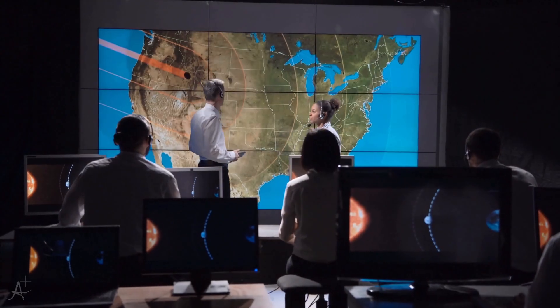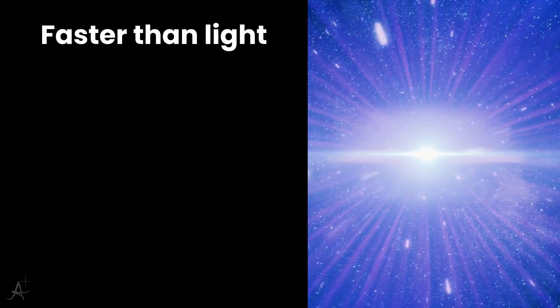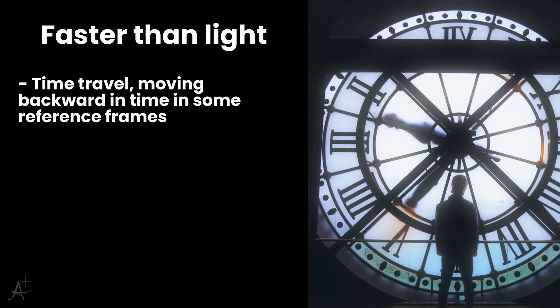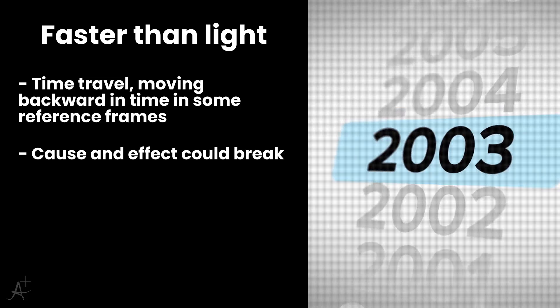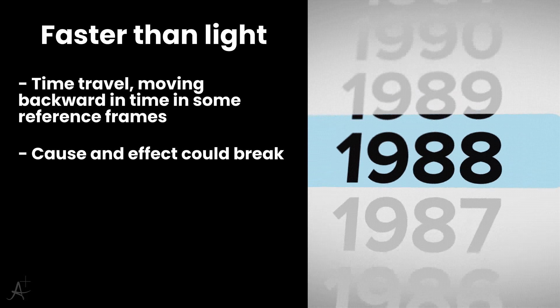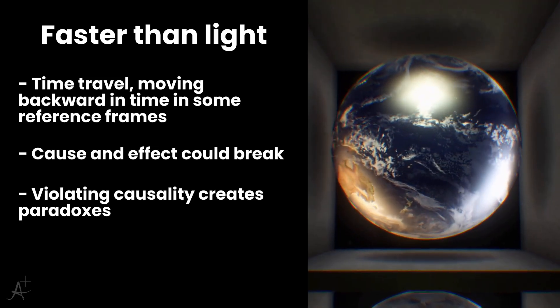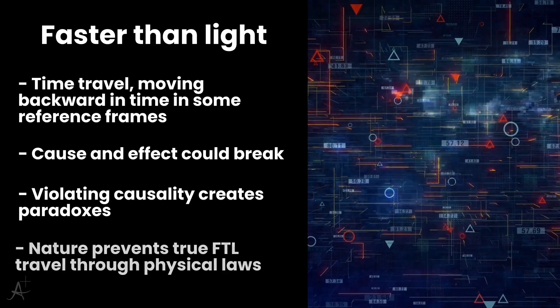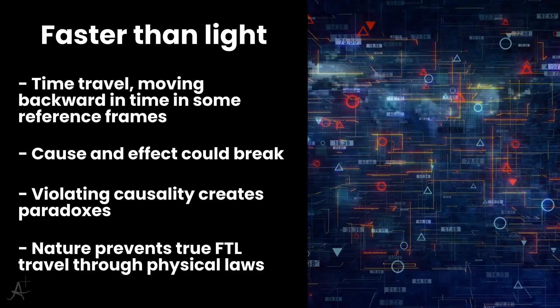But let's say we could somehow harness negative energy. If we could manipulate spacetime itself, would faster-than-light travel really be possible? Here's where things get even stranger. When you move faster than light, relativity predicts something astonishing. You could theoretically move backward in time. Faster-than-light travel and time travel are deeply connected. In some reference frames, an object traveling faster than light would arrive before it left. Cause and effect would reverse. It breaks one of the most fundamental principles of physics: causality. And once causality breaks, paradoxes start to appear. What happens if you go back and stop yourself from leaving? What if information arrives before it's sent? These contradictions make most physicists think nature has built-in mechanisms to prevent true faster-than-light motion.